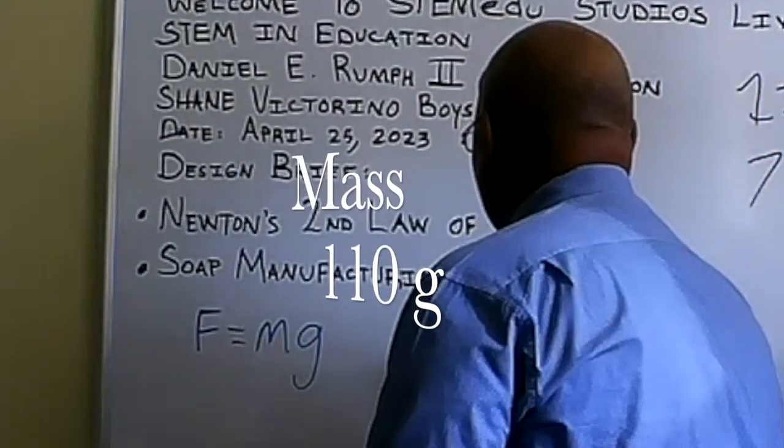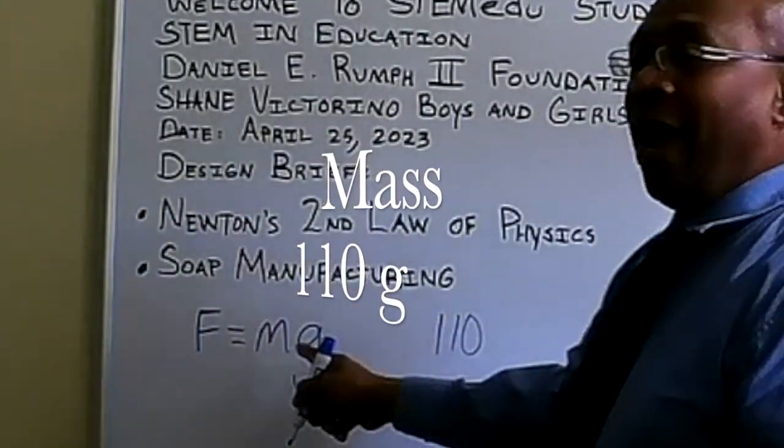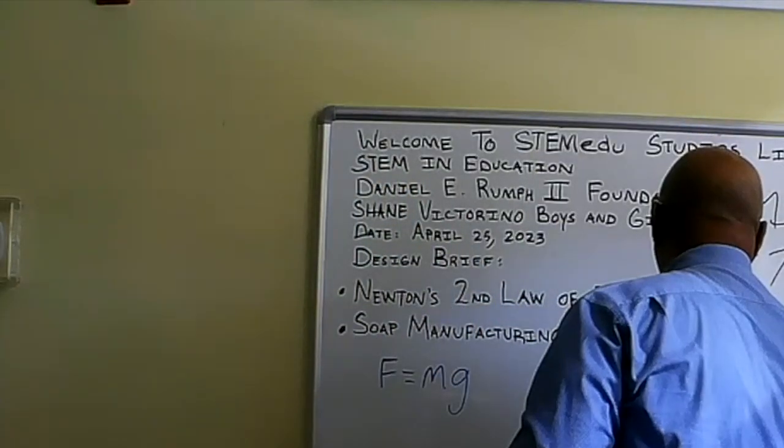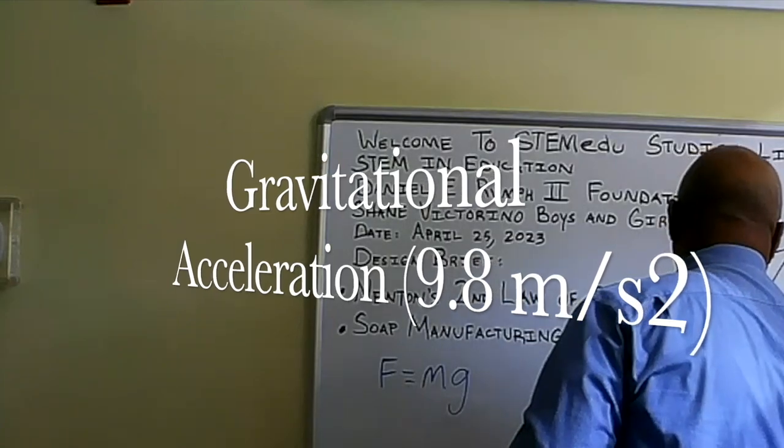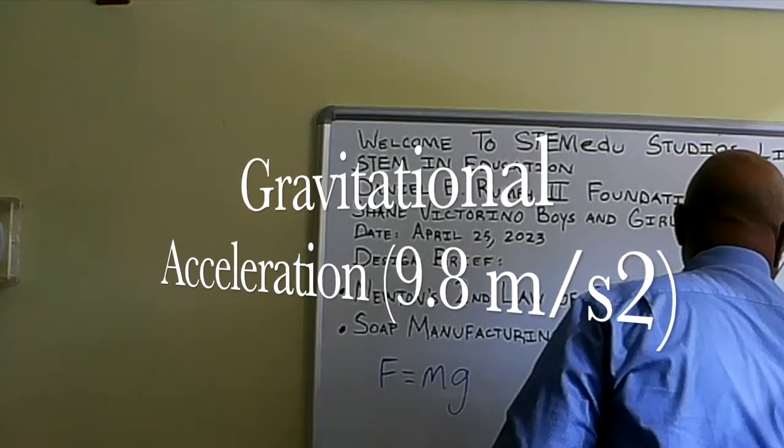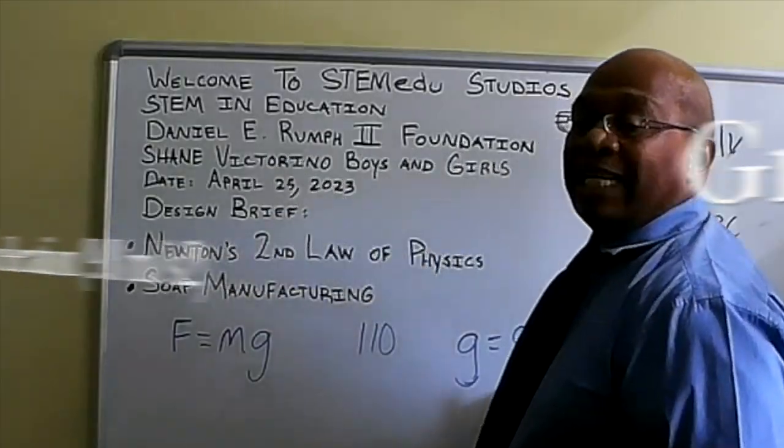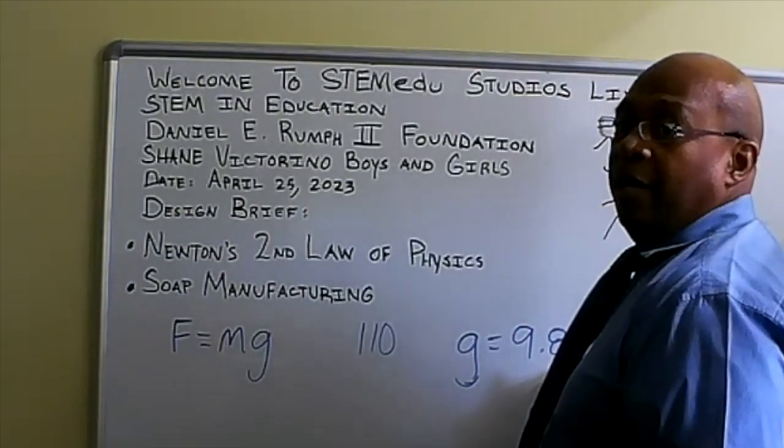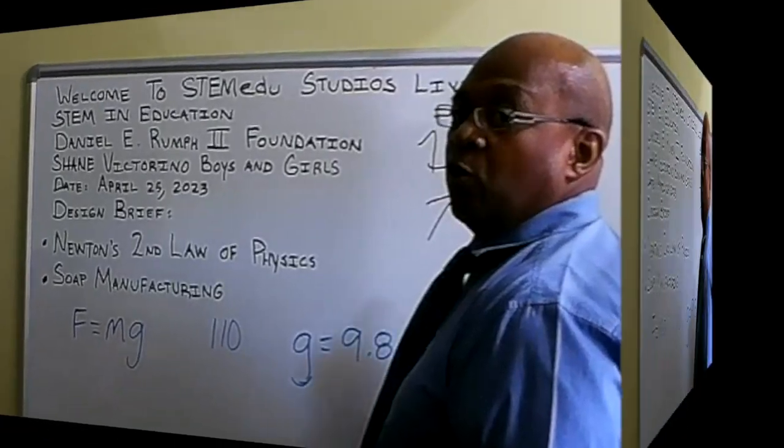It's 110. And gravitational on earth is, don't ever forget this, 9.8 meters per second squared. Everyone say 9.8. 9.8 meters per second squared.